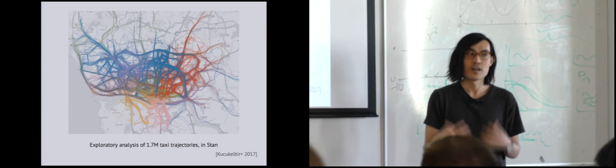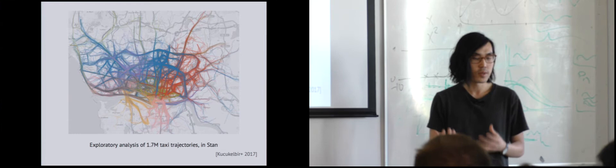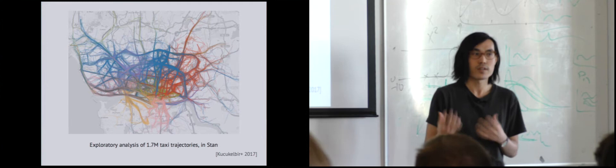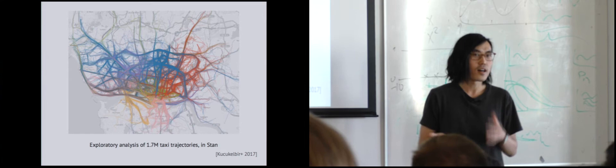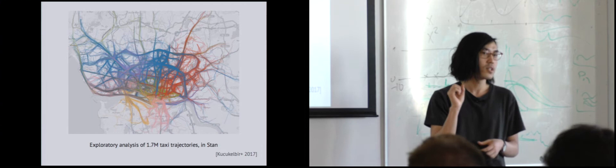The public domain dataset of taxi rides from the city of Porto has 1.7 million taxi trajectories. We'd really just like to do some typical exploratory analysis to see what the dataset looks like. A typical way you would do this in statistics or general scientific analysis is to subset the data, apply some summary statistics or a simplified model, and see what happens.